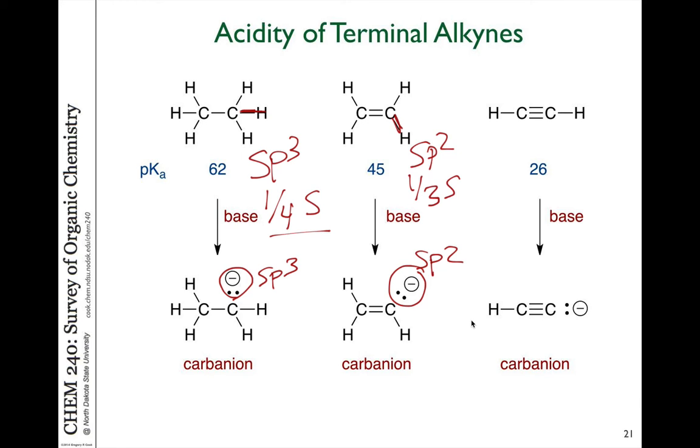Now when we look at the alkyne, this is sp hybridized, so it's actually one-half or 50 percent s character. So this anion resides in a 50 percent s orbital. And as we know, s orbitals are lower in energy than p orbitals. Thus electrons are more stable if they reside in orbitals which have more percentage of s character. That is why we see an increase in acidity going from alkane to alkene to alkyne, because the stability of the negative charge is affected by the hybridization of the orbital.